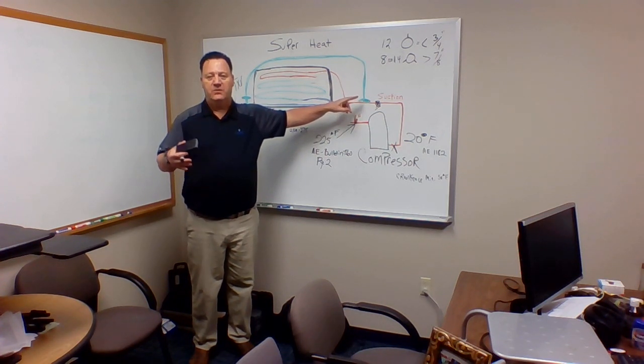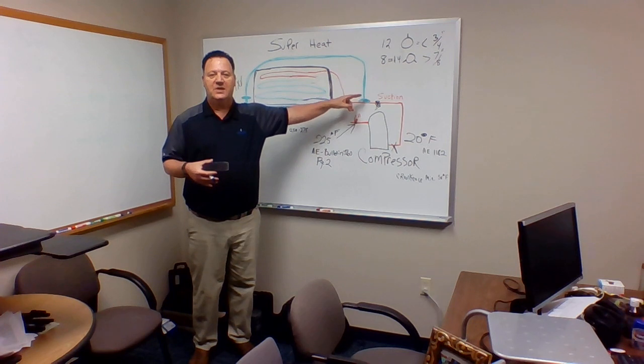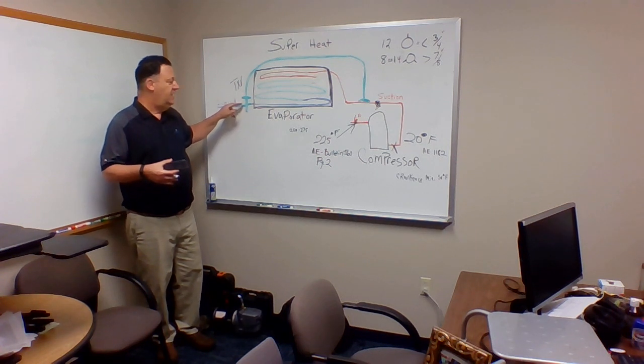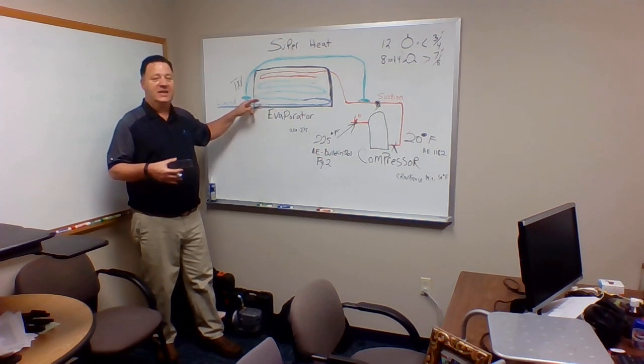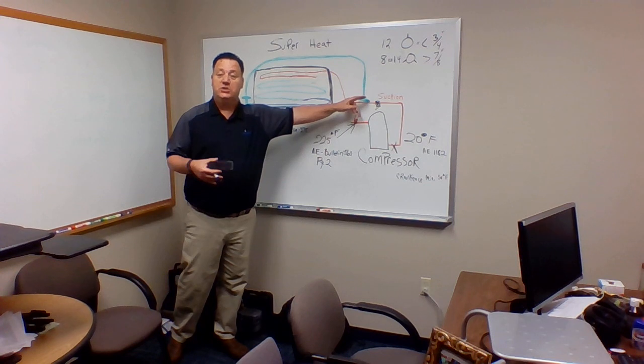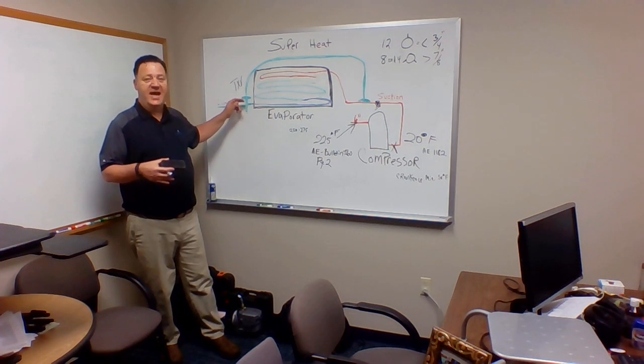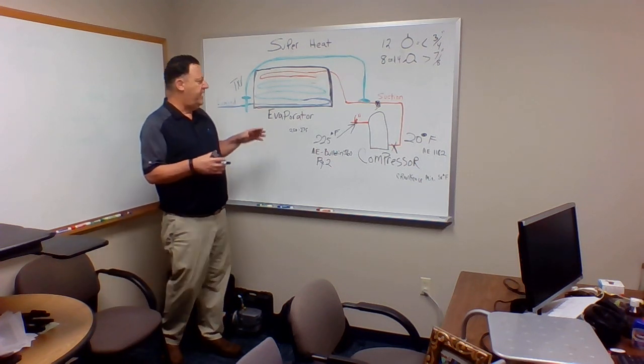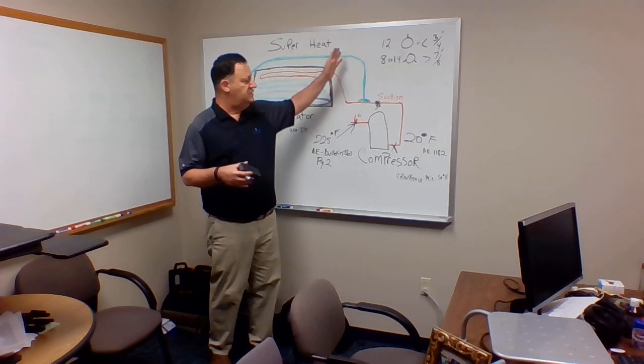So now we're fully vapor as we enter here. The bulb is reading that vapor temperature as it's coming out and adjusting. This bulb, by the way, is usually nine times out of 10 filled with the same refrigerant that's in the system. So as it heats up, there's a pressure temperature relationship there. It's by pressure, it's pushing back, opening that diaphragm on that TXV and either allowing more liquid refrigerant in, or it's shutting it down and lessening it if it has too low of superheat. We're boiling off, we're getting into a vapor. We're reading that this is adjusting.